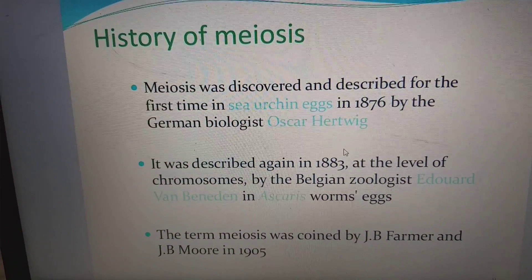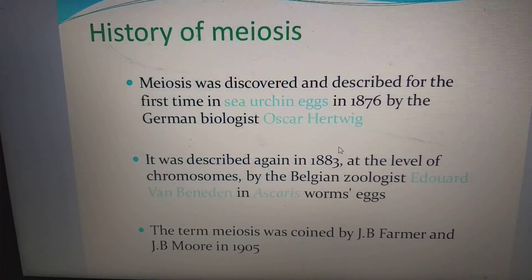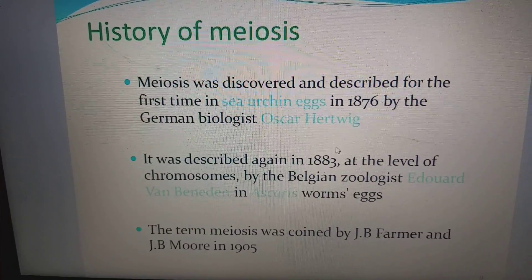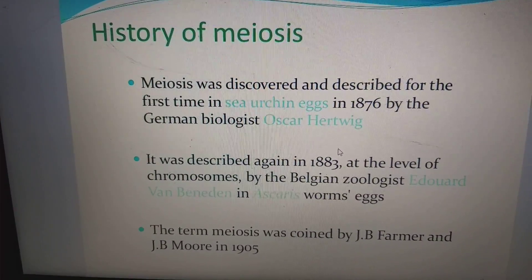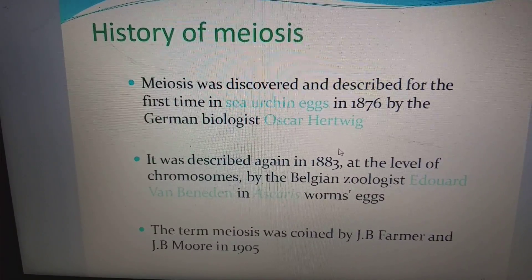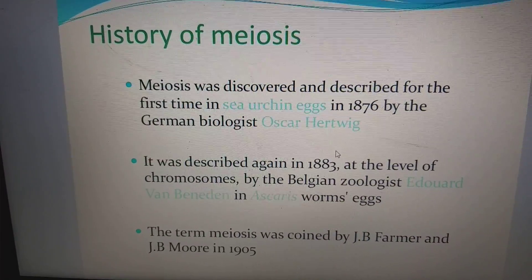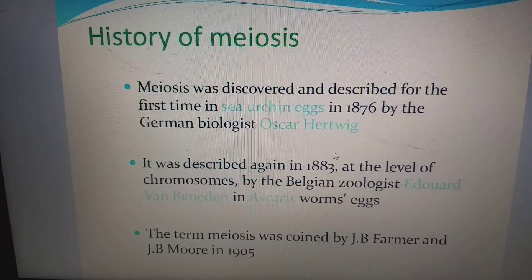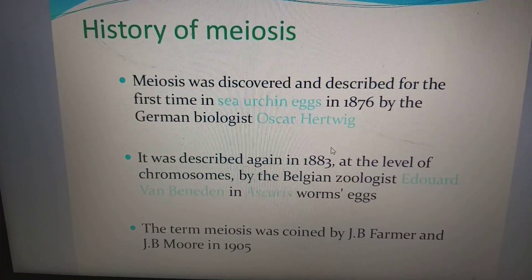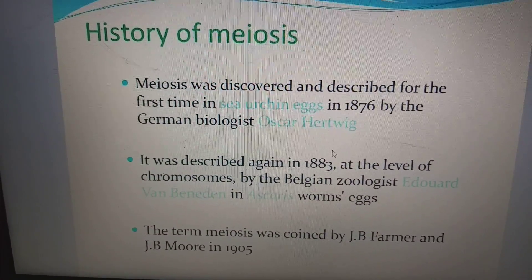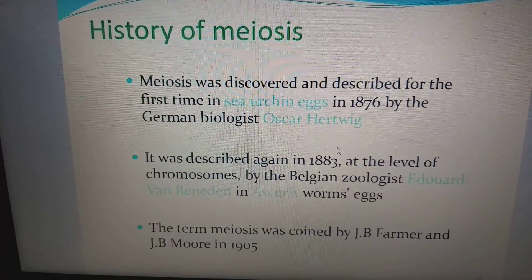Meiosis was discovered and described for the first time in sea urchin eggs in 1876 by German biologist Oscar Hertwig. It was described again in 1883 at the level of chromosomes by Belgian biologist Eduard van Beneden in Ascaris worm eggs. The term meiosis was coined by J.B. Farmer and J.B. Moore in the year 1905.